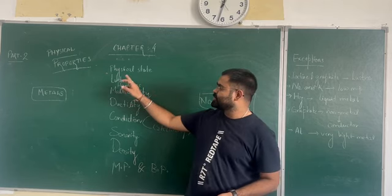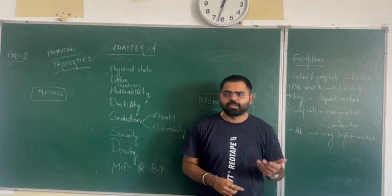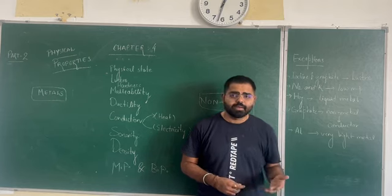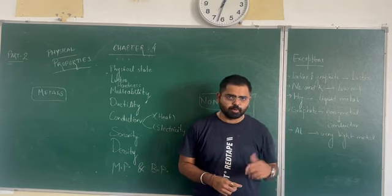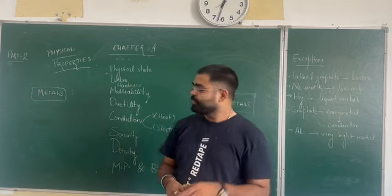Then next comes lustre. As far as lustre is concerned, it means basically a shiny appearance that a metal has. For example, if you would have seen gold, silver, or iron, they have this specific shiny property on them. This shininess is basically found in metals mostly.